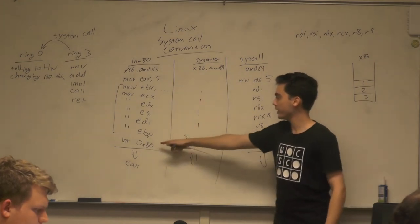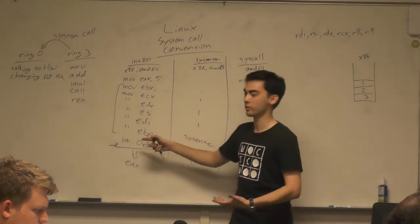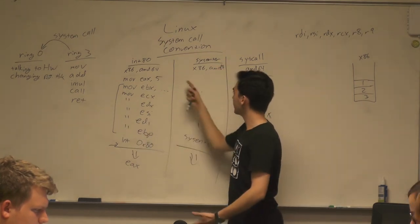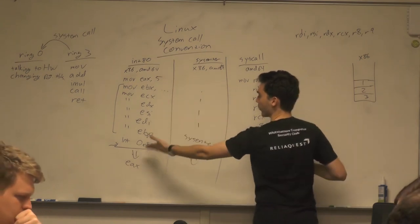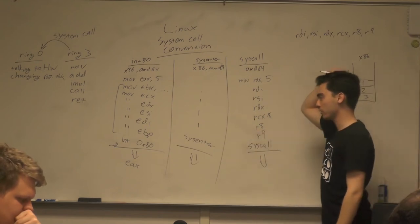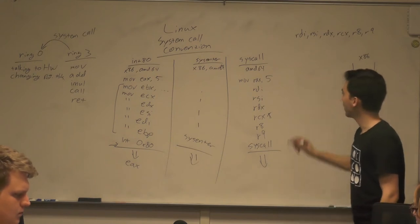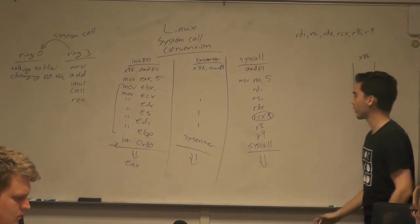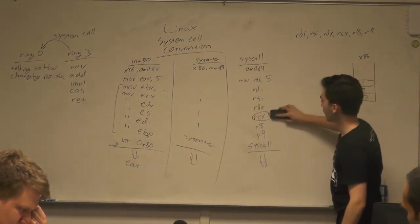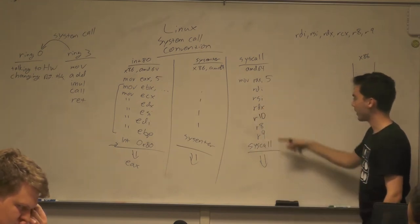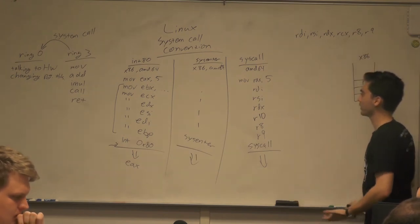Why is there an asterisk next to RCX? The syscall instruction saves the instruction pointer — the return address — into RCX. So once the kernel is done, it can return to that address. Since RCX is overwritten, we can't use it to pass the fourth argument. Linux chose R10 instead. So for the syscall interface: RDI, RSI, RDX, R10, R8, R9. If you remember it's basically the function calling convention but with R10 replacing RCX, it makes sense.